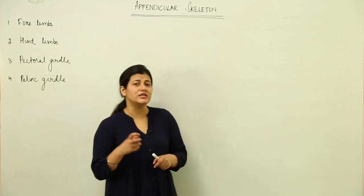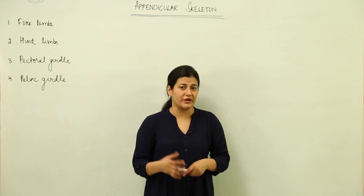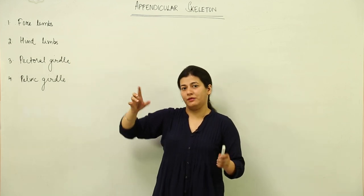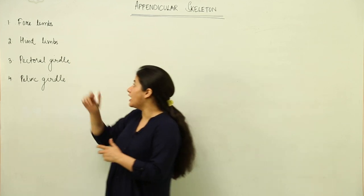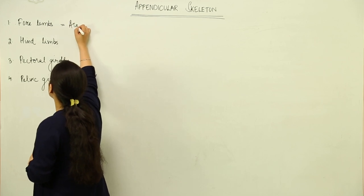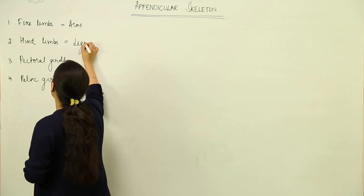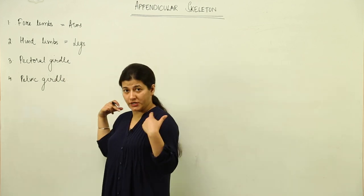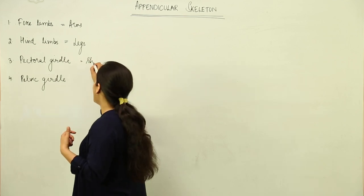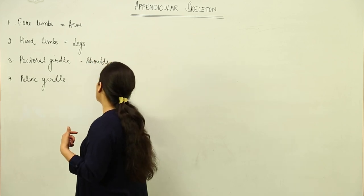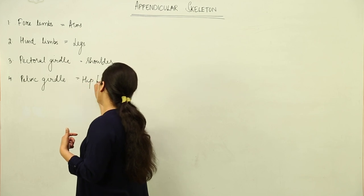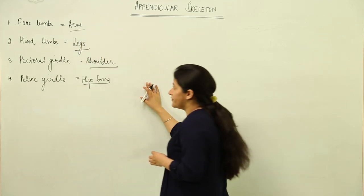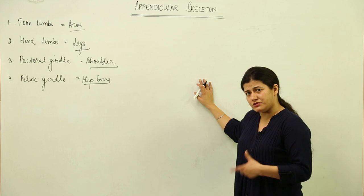The appendicular skeleton comprises four components: forelimbs, which are our arms; hind limbs, which are our legs; the pectoral girdle, which is the shoulder area; and the pelvic girdle, which is the hip area — essentially the hip bone that we'll be discussing.